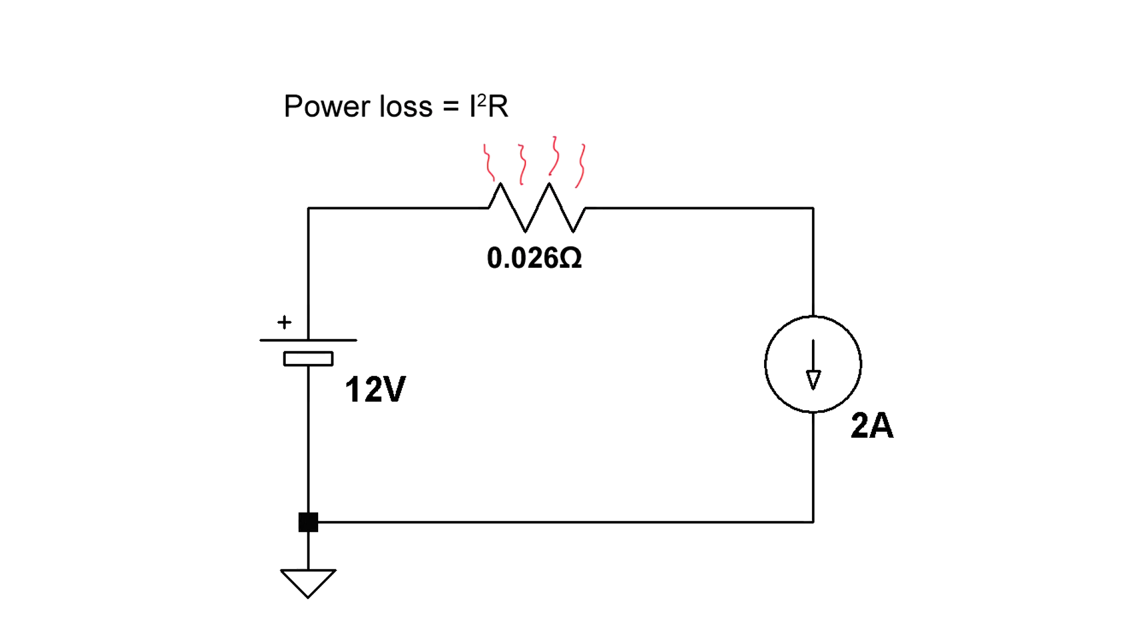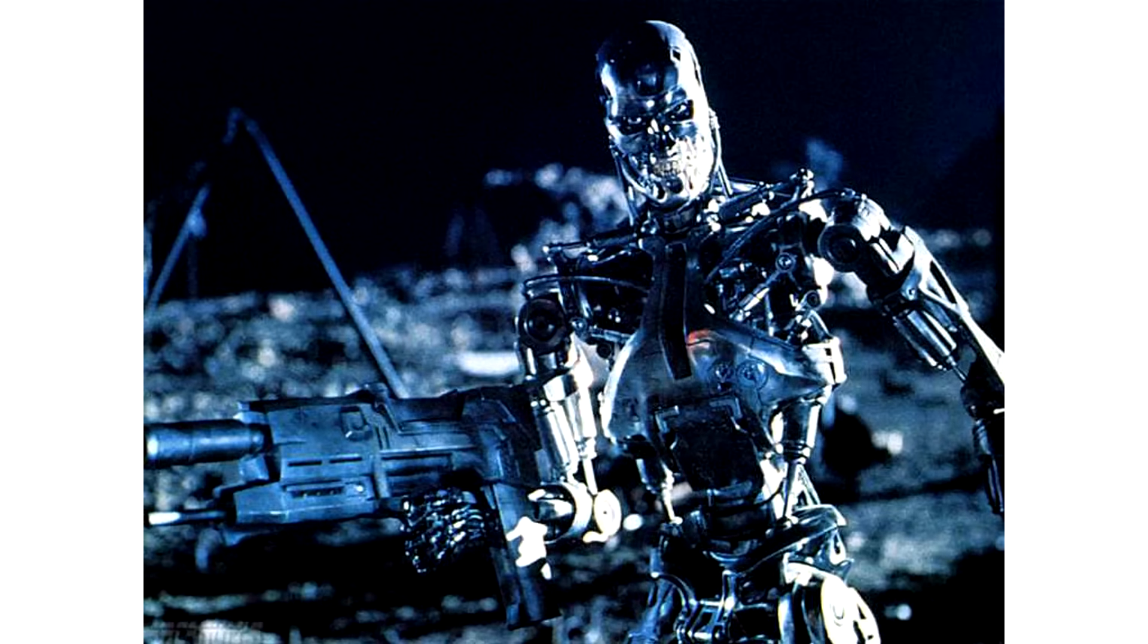When you have steady DC flowing through the MOSFET, the power loss is given by I²R. So 2 amps times 2 amps times 26 milliohms equals 0.1 watts. That's 17 times less than what we had with the initial diode. So now you can design more efficient killing machines.